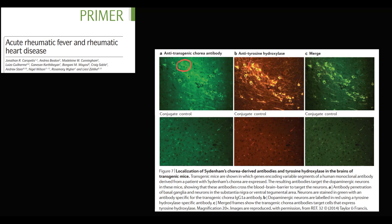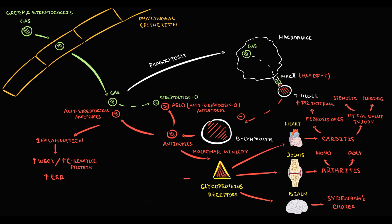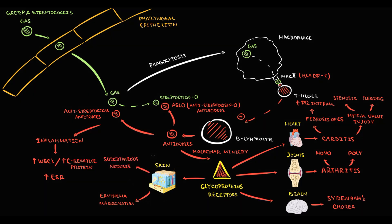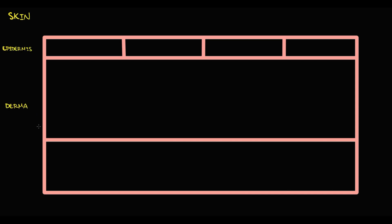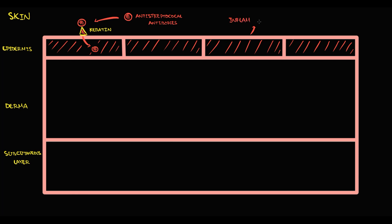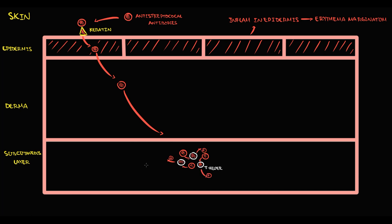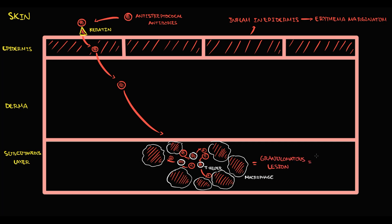On this image we can see antibodies against Streptococcus in brain tissue; due to staining they appear brighter in color. The last target of antibodies is the skin, where injury can manifest as erythema marginatum or subcutaneous nodules. The skin has three layers: epidermis, dermis, and subcutaneous layer. Anti-streptococcal antibodies bind to keratin — a major structural component of the epidermis — and induce inflammation that manifests as erythema marginatum. Antibodies can also cross into the subcutaneous layer, activating T-helpers and macrophages, which together form granulomas resulting in subcutaneous nodules.